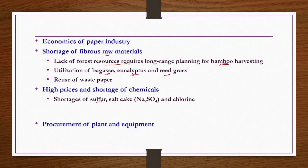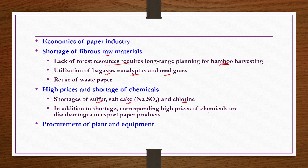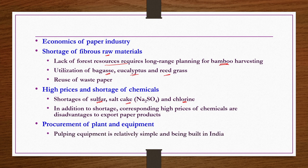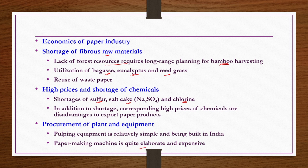India does not have indigenous sulphur, so shortages of sulphur, salt cake (Na2SO4), and chlorine are challenges. Imported sulphur, when converted to Indian rupee cost, means high chemical prices, limiting paper export competitiveness. Pulping equipment is relatively simple and is built in India, but the paper making machine and Fourdrinier machine are quite elaborate and expensive. If such machines can be manufactured domestically and run continuously, there would not be a setback for the paper industry.